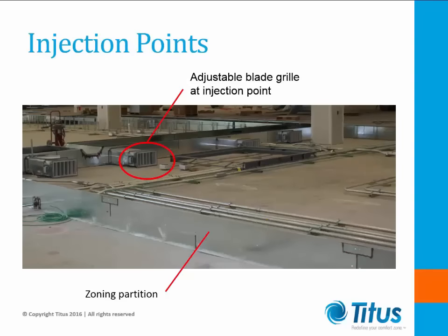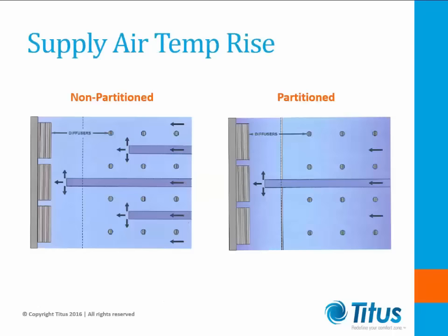In this slide, you can see both an injection point and some zone partitions. Notice that the discharge of the injection point has been fitted with a grill. You can also see how the zone partitions have been notched and sealed to go over conduit, plumbing, and other obstructions found beneath the floor. Sometimes partitioning is necessary to limit supply air temperature rise. As cool air from the air handler moves across the UFAD plenum, it is in contact with the floor panels above and the concrete slab below. In a multi-story building, the slab is also in contact with warm return air from the floor below, which tends to heat the slab and warm the supply air going to the floor above. This is why injection points need to be no further than 30 feet from the furthest diffuser.